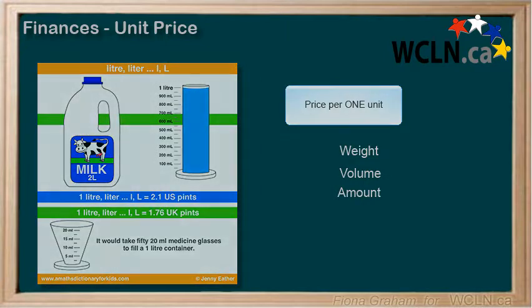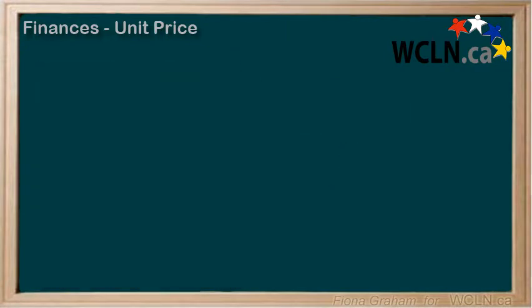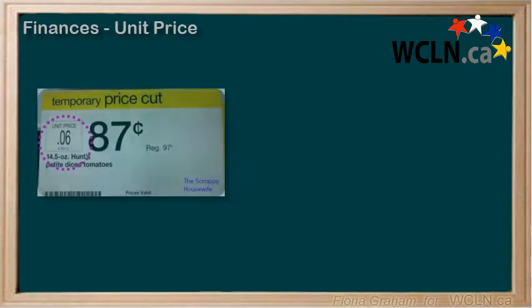In Canada, Quebec is the only province that has the law that the unit price for any given item must be marked on the price ticket. Every other province in Canada is doing this just on a voluntary practice.